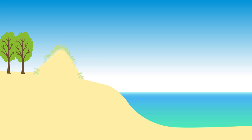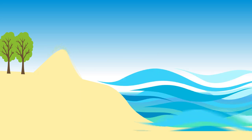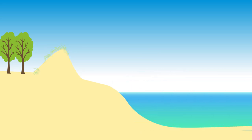Many beaches are backed by sand dunes that formed when sand was transported from the beach inland by strong winds over many years. But dunes can be quickly eroded by waves during storms, returning some of their sand to the sea in a matter of hours.